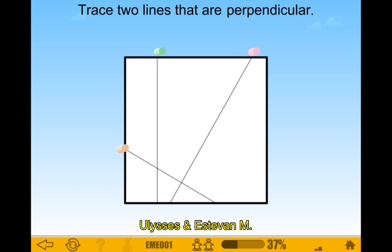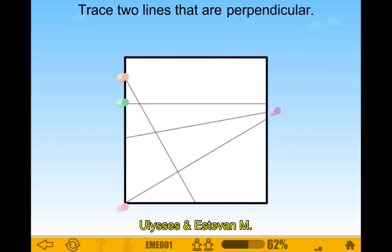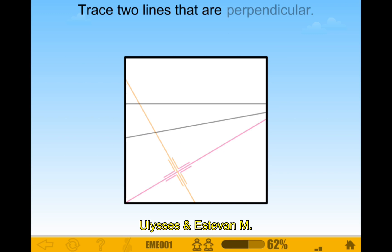Trace two lines that are perpendicular. What lines are perpendicular? Oh, I see — right here. There we go. Two lines that are perpendicular — this one, this one, and this one. There we go. Two lines that are perpendicular — okay, I see, right here. And wait, which one? And this. There we go.